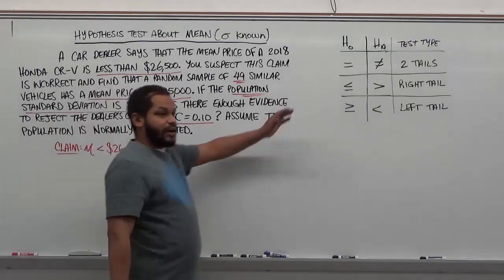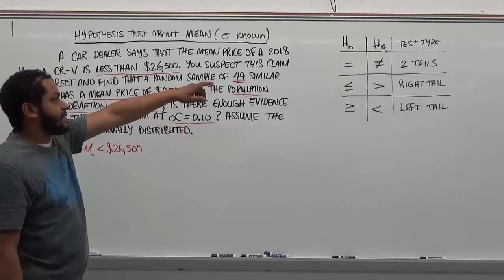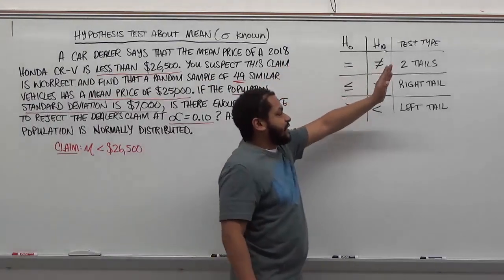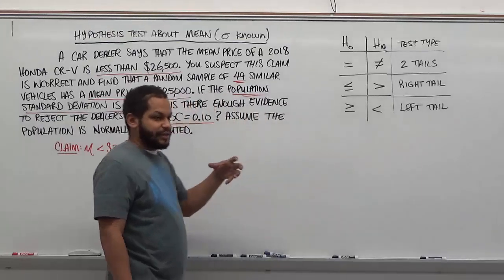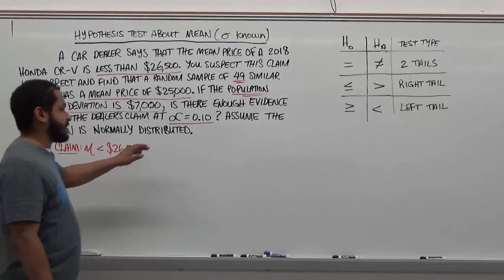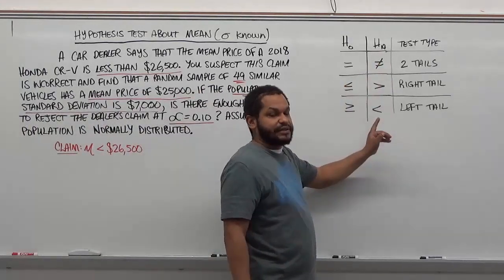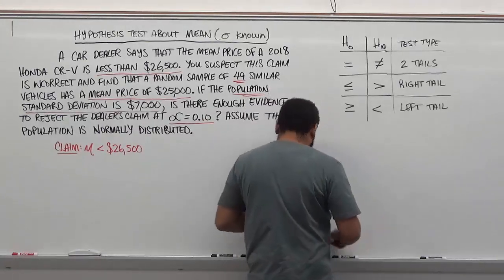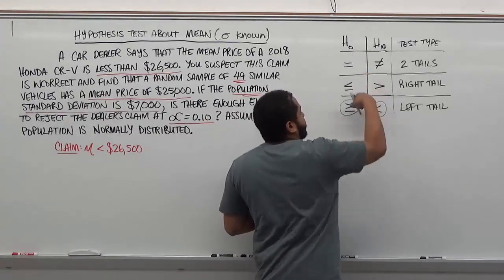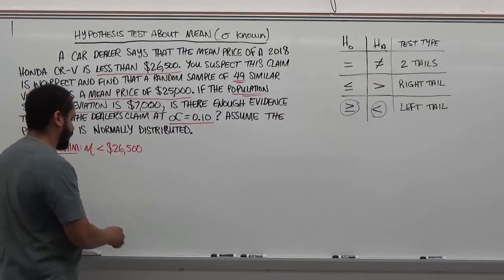Now that we have our claim, we're going to use our hypothesis table to determine our null and alternative hypothesis and what kind of test type we have. This is steps one through four all combined. Being that we have our mean being a less than symbol for $26,500, we take a look at our alternative which has the symbol we see. We're going to match these two symbols to our null and alternative hypothesis with the same two components.